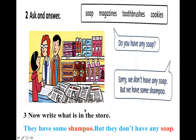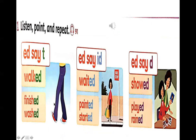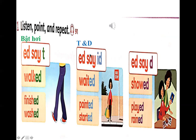Bây giờ chúng ta sẽ qua phần tiếp theo — đó là phần phonics. Phonics của chúng ta hôm nay là cách đọc ED trong tiếng Anh. Cách đọc ED trong tiếng Anh sẽ có 3 dạng: đầu tiên là đọc là /t/, sau đó là /ɪd/, rồi là /d/. Thầy thấy các bạn đọc sai rất nhiều phần này — cái nào các bạn cũng đọc là /ɪd/, nhưng không phải. ED có 3 cách đọc ở quá khứ. Đối với chữ /t/ thì những âm mà bật hơi thì chúng ta đọc là /t/. Đối với /ɪd/ thì tận cùng là T hoặc D thì chúng ta đọc là /ɪd/.